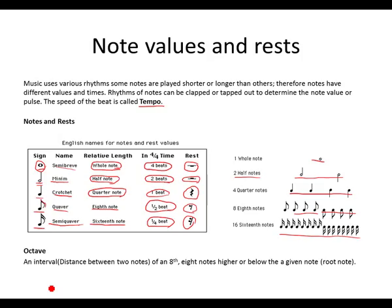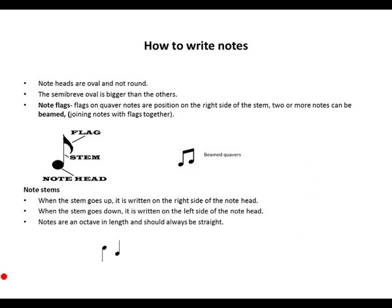Now we're going to take a look at what an octave is. An octave is an interval — interval means the distance between two notes. An octave is an interval of an eighth: eight notes higher or lower than the given note. That's what an octave is.